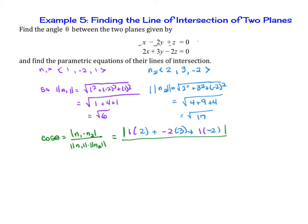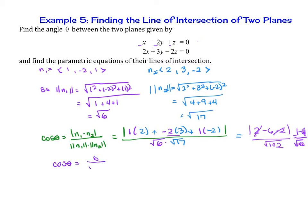Simplifying, the numerator is the absolute value of 2 minus 6 minus 2, all over the square root of 102, since 6 times 17 is 102. So the numerator becomes the absolute value of negative 6, which is just positive 6. Therefore, cosine of theta equals 6 over the square root of 102.